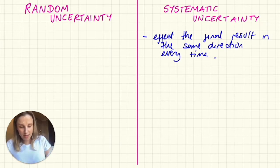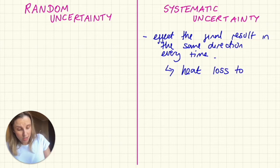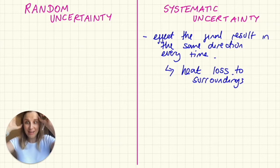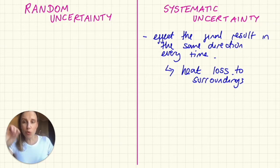So things I'm talking about here are if you're doing an energetics experiment, heat loss to surroundings. If you're doing a calorimetry experiment you're definitely losing some heat to those surroundings, but that heat loss is always going to be lost. You're never going to gain heat randomly from the surroundings. It's always lost, always shifted in one direction.